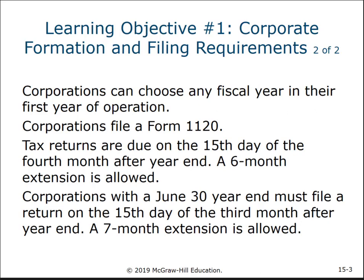When you form a corporation, you're going to decide a couple of things. First, you'll decide the time period in which you're going to report your income. Corporations can choose a fiscal year. In their first year they have some choices — they could do a short year, for example starting June 1st and ending December 31st, or they could do a full 12-month fiscal year. A fiscal year is any year that doesn't end on December 31st.